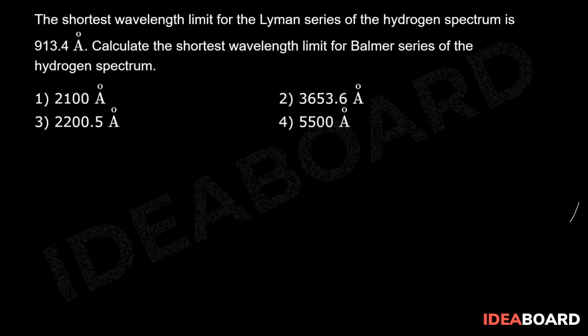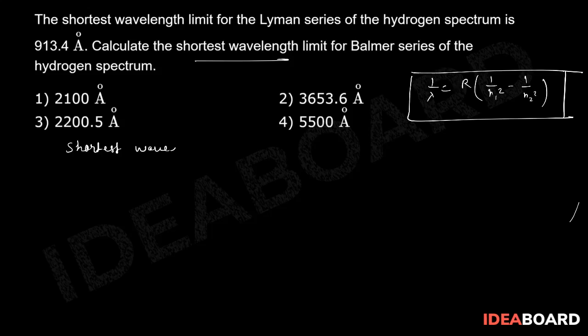So what is the calculation part? We have the formula: 1 upon lambda is equal to R times 1 upon N1 square minus 1 upon N2 square for hydrogen. Now they are talking about the shortest wavelength for Balmer series.